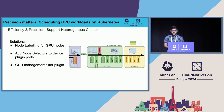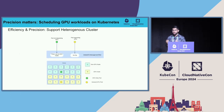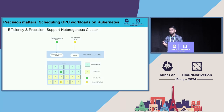Kubernetes allows you to write plugins for various points in the scheduling cycle of a pod. A filter plugin will filter out any candidate nodes which are not suitable for a particular pod's scheduling. If you have a pod which is not requesting GPUs, the GPU filter plugin will filter out all GPU nodes from its possible candidates, and your CPU-only workloads will only run on CPU nodes. If you have a pod which is requesting GPUs, the filter plugin is a no-op and the pod will directly get scheduled on GPU nodes.